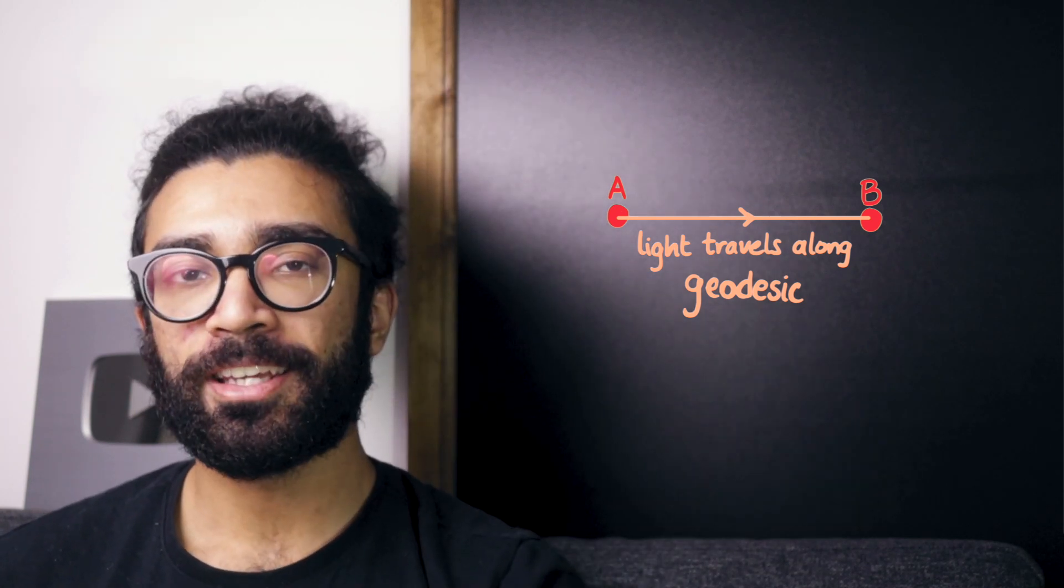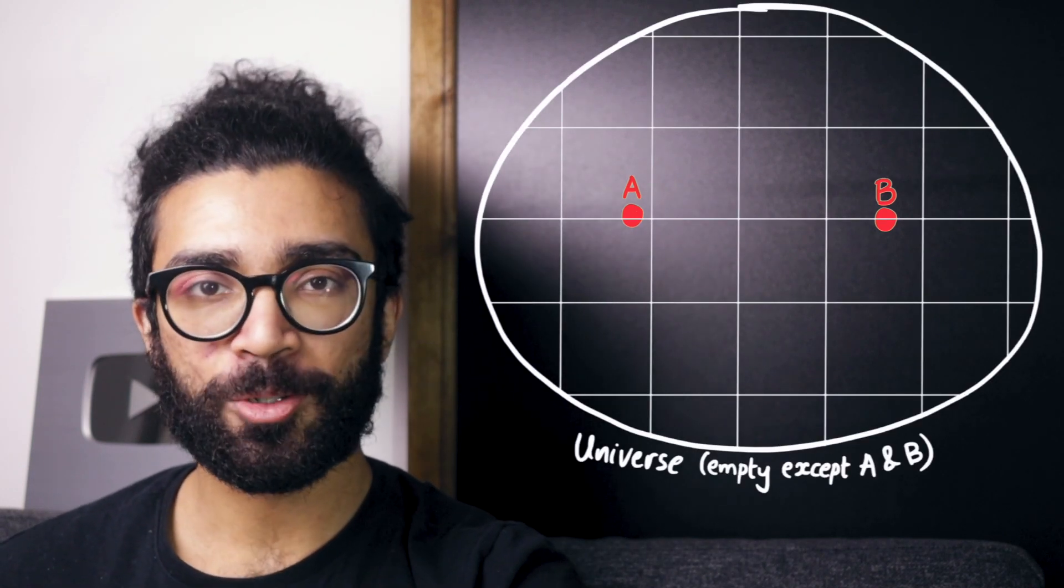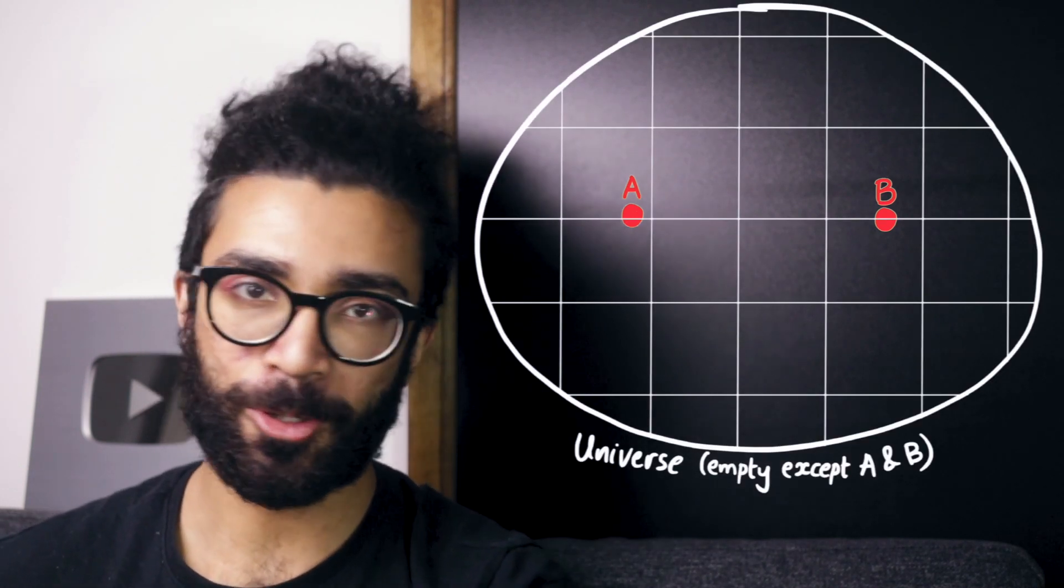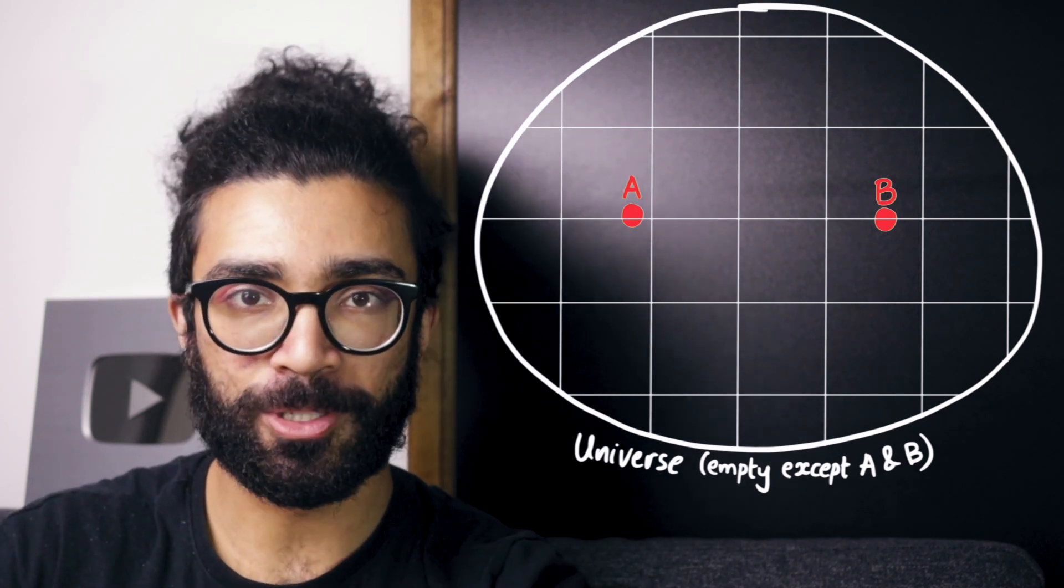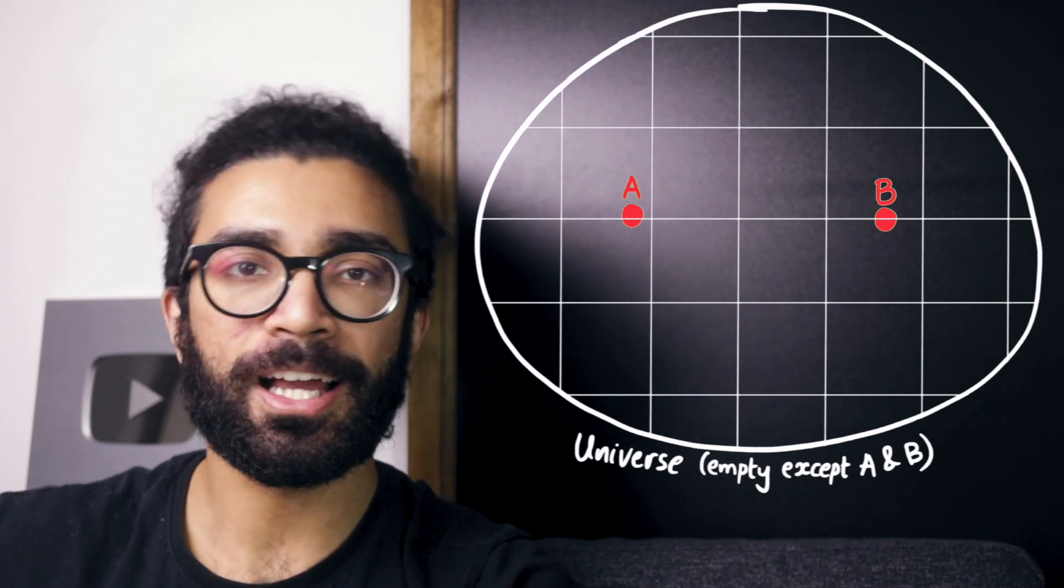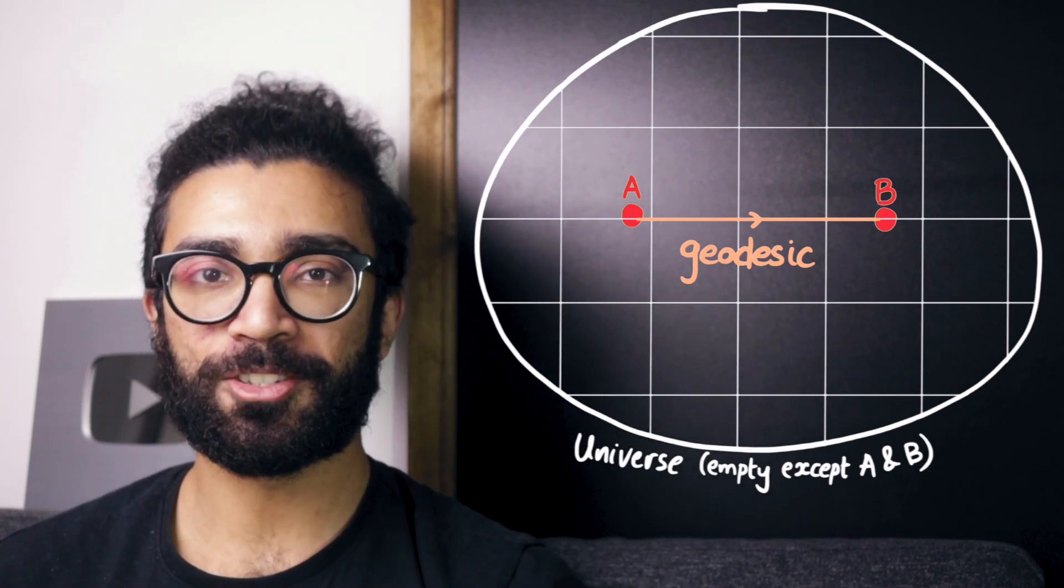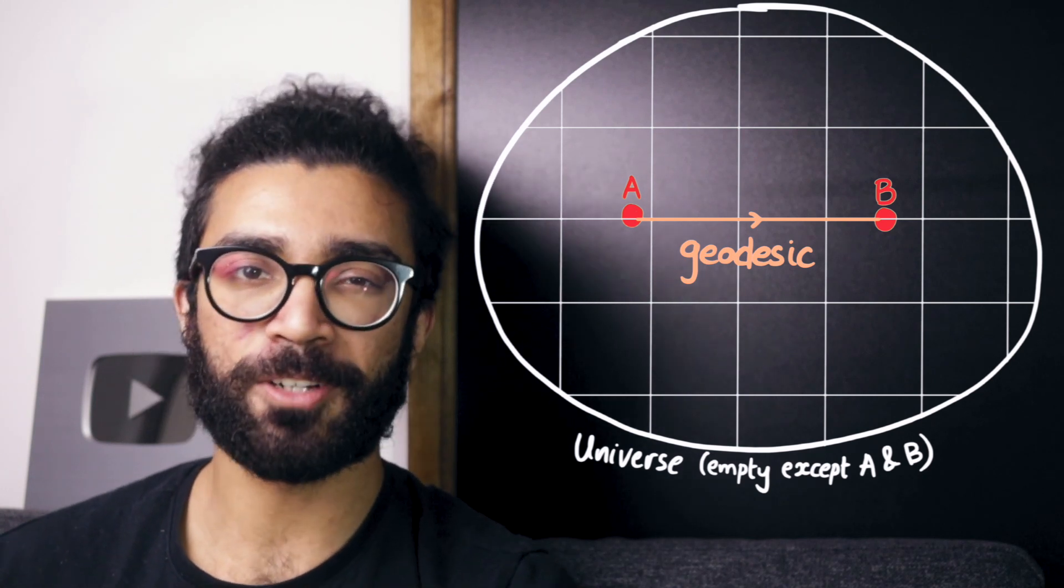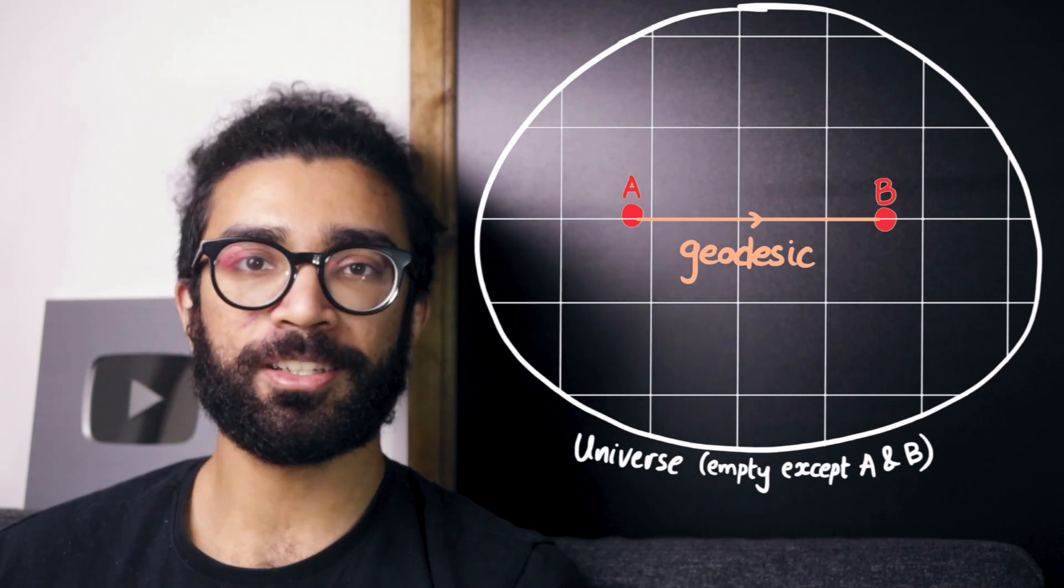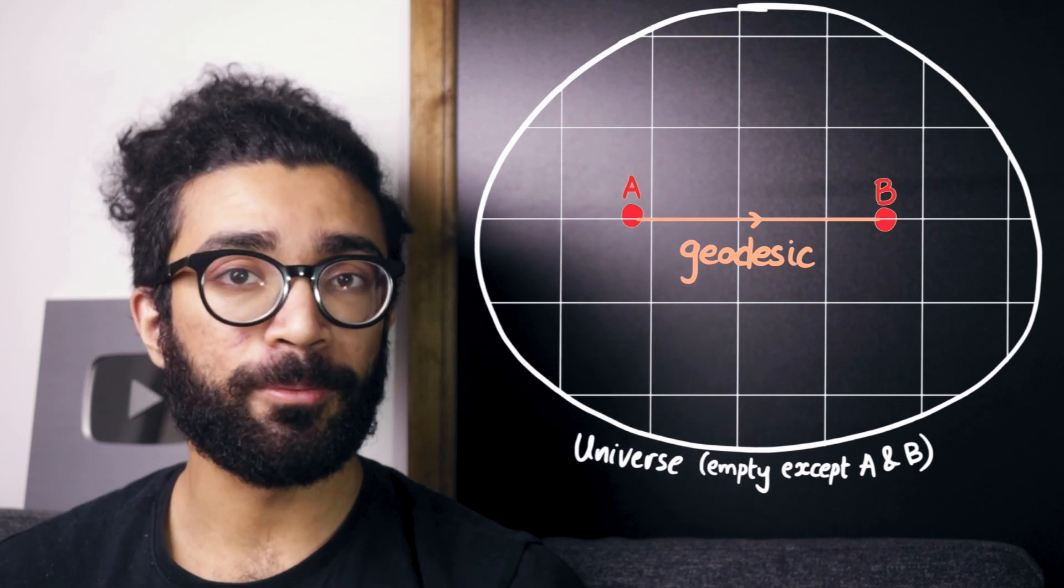Let's now imagine that we're thinking about two events in empty space-time. Other than these two events, there's basically nothing around. No stars, no galaxies, no nothing. Well in this situation, our geodesic, the shortest interval between these two events, looks kind of like our straight line example from earlier. Remember though that this illustration is a two-dimensional representation of 4D space-time, so it's kind of cutting some corners and so on, but it's a good visual tool. Anyway, so dealing with this kind of space-time, empty space-time, is pretty simple.